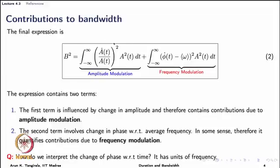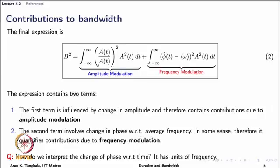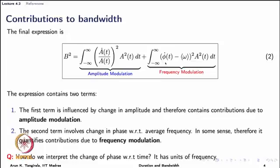The first term goes to zero whenever a(t) is constant, i.e., whenever ȧ(t) = 0. That means whenever there is no amplitude modulation this term vanishes, since ȧ(t) is the derivative of a(t). Whenever there is amplitude modulation this term will exist, and therefore this term solely accounts for the amplitude modulation contributions to the bandwidth.